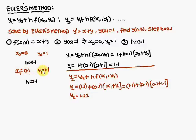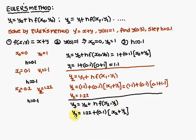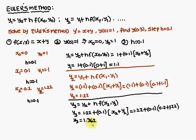x1 is 0.1, y1 is 1.1, h is 0.1. Therefore the next value x2 is equal to 0.1 plus 0.1, giving 0.2. And y2 is equal to 1.22. Again, one more step: y3 is equal to y2 plus h into f of x2, y2. y2 is 1.22, h is 0.1, x2 is 0.2, y2 is 1.22. Substituting, y3 is equal to 1.362.